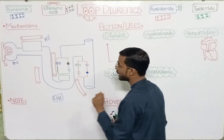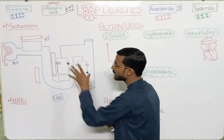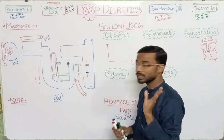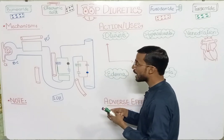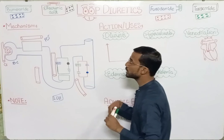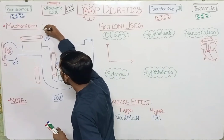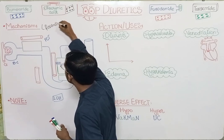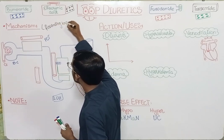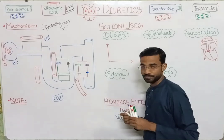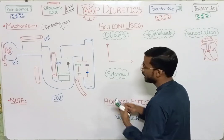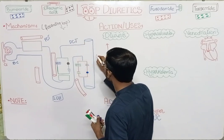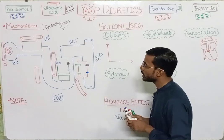Loop diuretics act on the ascending loop of Henle — this is the main point. The loop diuretic acts at the ascending loop. And here you also see the distal convoluted tubule and the collecting duct.